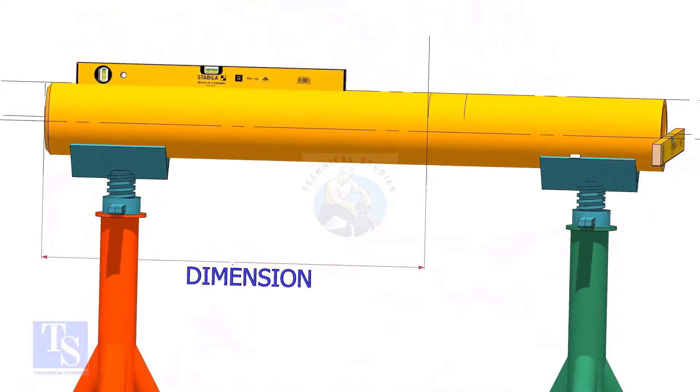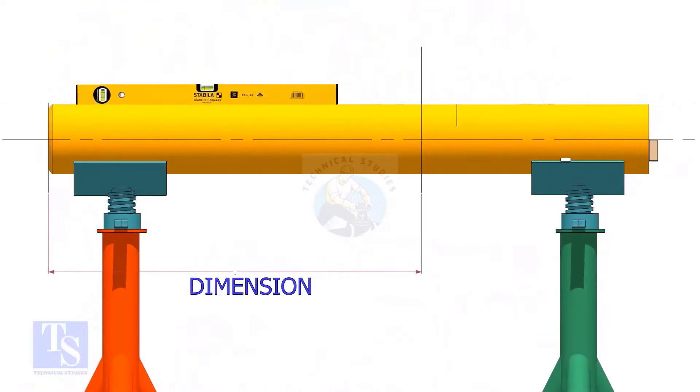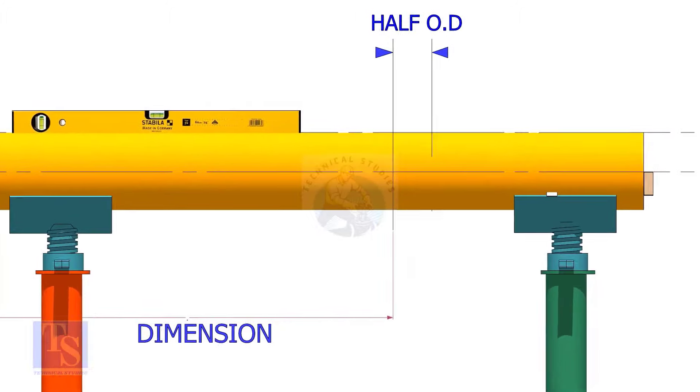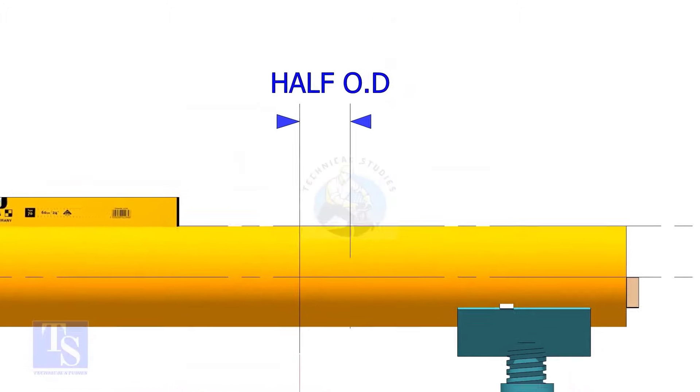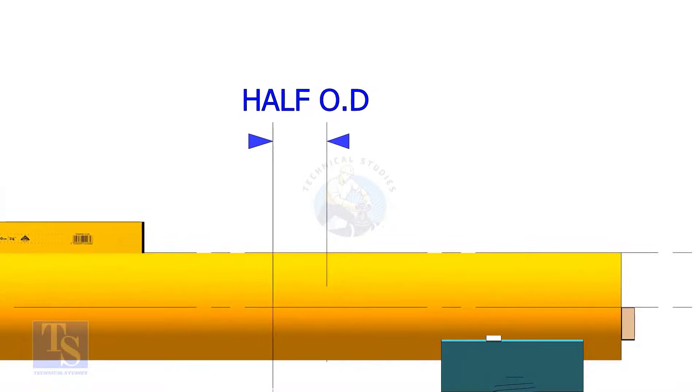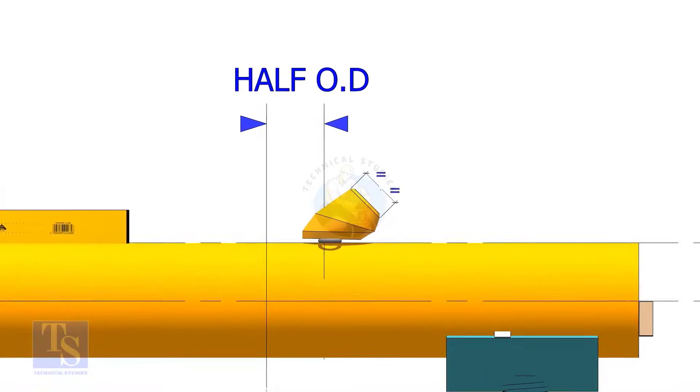Mark half OD of the header in the direction of the lateralette on the top of the pipe. This line is actually for inspection purposes only. Put the lateralette on the marking as shown. Don't forget to put the gap rod.